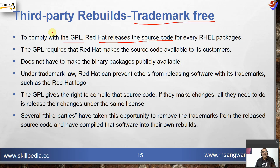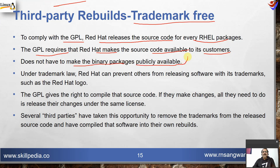That source code will remain open. You cannot download source code, compile it, make it your own trademark, sell it under your name, and hide the source code. The GPL does not allow this. Red Hat also has to comply with this. To comply with GPL, Red Hat releases the source code for every RHEL package. GPL requires that Red Hat makes the source code available for its customers, but does not have to make binary packages publicly available — that's an interesting fact.